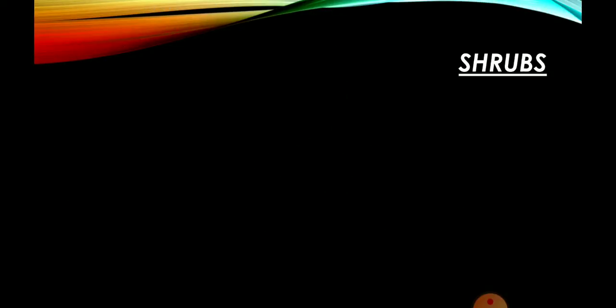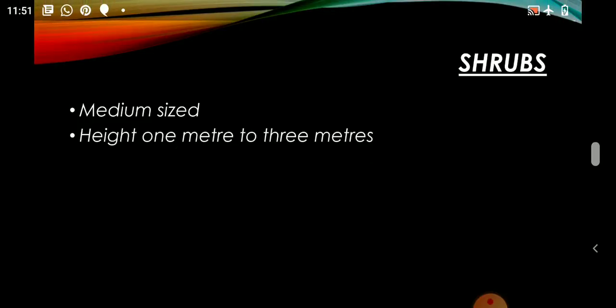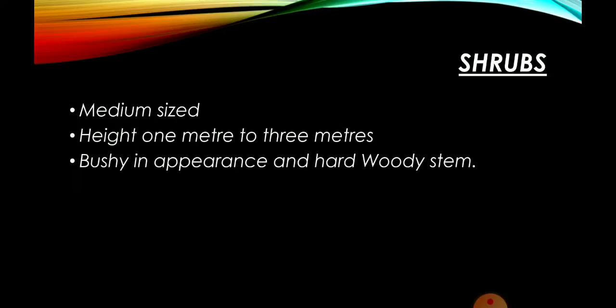Then shrubs पे आते हैं हम। Shrubs का size अगर हम देखें — they are medium size, वो 1 meter से लेके 3 meters तक होते हैं। And exceptional कुछ shrubs हैं जो 6 meter से 8 meter तक भी पहुँच जाती हैं। इनकी जो appearance होती है वो bushy होती है, झाड़ियों की तरह लगते हैं। और इनका जो stem होता है वो hard होता है, wood की तरह। जैसे cotton plant होता है, rose plant होता है — यह होते हैं shrubs.